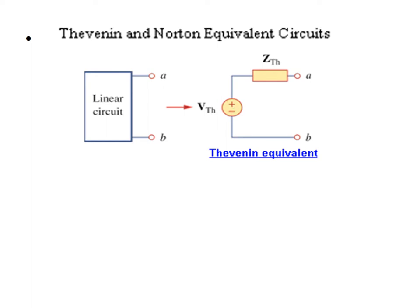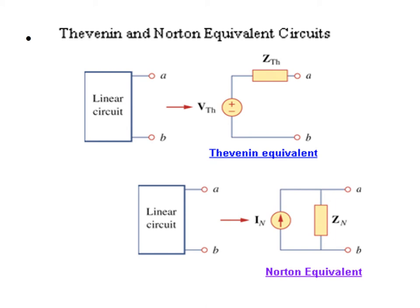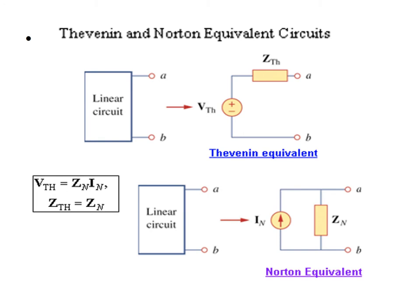So V_thevenin is a voltage source and an impedance in series, making the Thevenin equivalent circuit. Similarly, the Norton circuit uses a current source at terminal AB when shorted, with the same equivalent impedance. Z_thevenin equals Z_Norton, and the relation between the two is that V_thevenin equals Z_N multiplied by I_N.